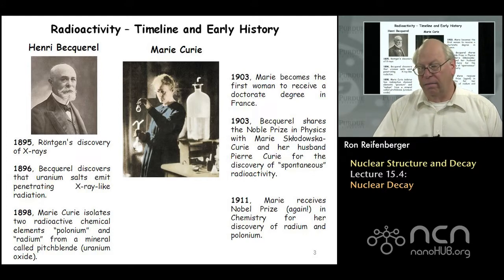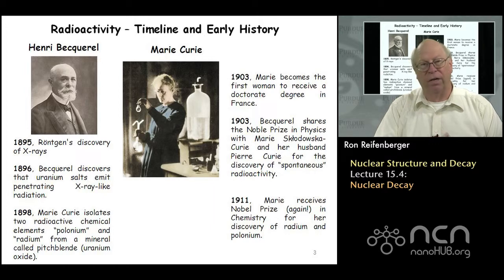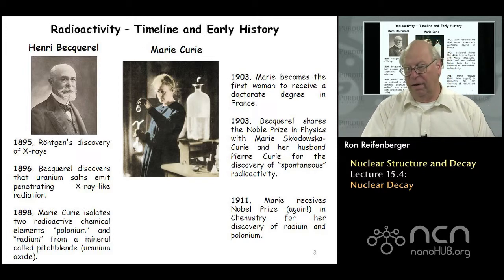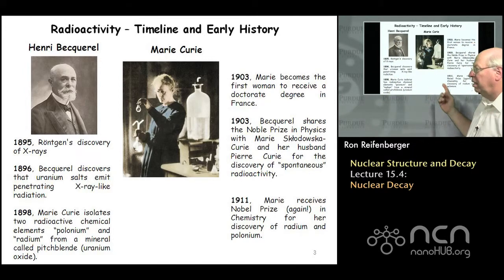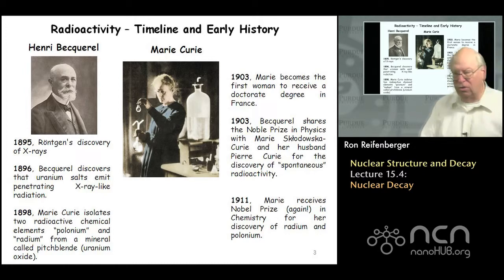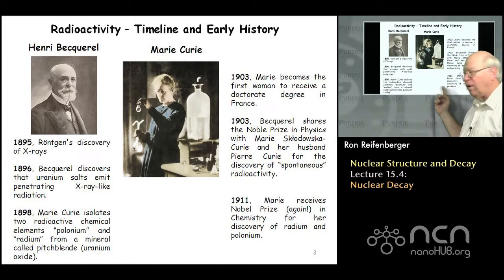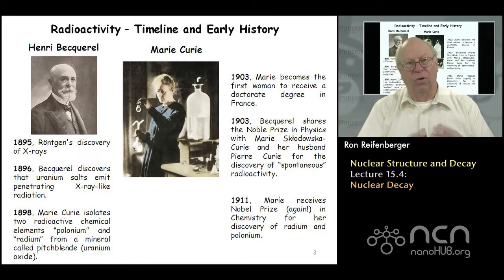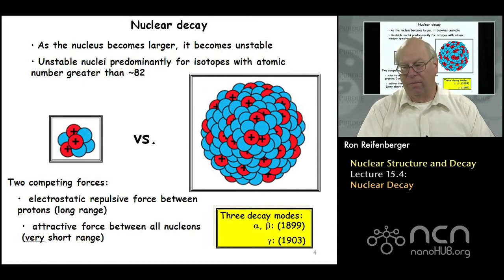In 1903 Marie Curie received a PhD degree from France — she was the first woman to receive such a degree in France. Also in 1903, Becquerel, Marie Curie, and her husband Pierre shared the Nobel Prize for the discovery of spontaneous radioactivity. Notably, Marie Curie received a second Nobel Prize eight years later in 1911, in chemistry, for her isolation of these two radioactive elements from uranium ores. This subject goes well back over 100 years.